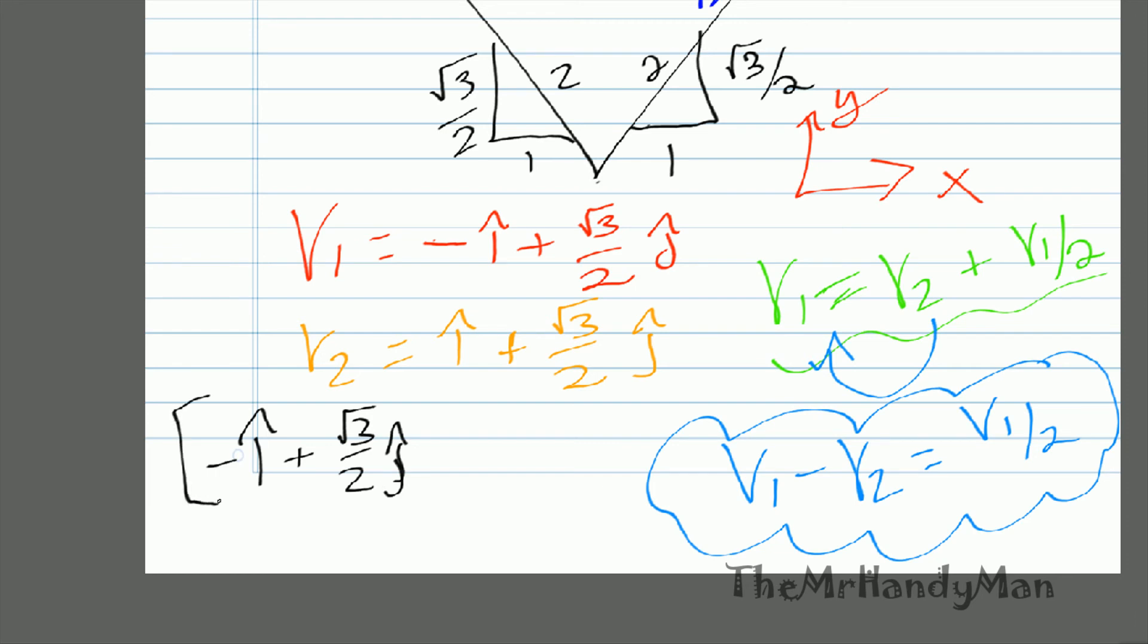So that's the first part minus i plus √3 over 2 j.